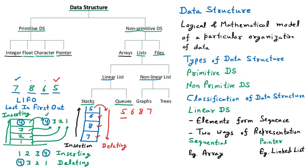Regardless of any order, whatever we enter inside the stack, the last element entered will come out first — that's why it is called the LIFO structure. For another layman example, consider the plates in your kitchen. The first plate is placed, then the second, then third, then fourth. But when you pick out a plate, you will not take the first plate — you will take the top plate.